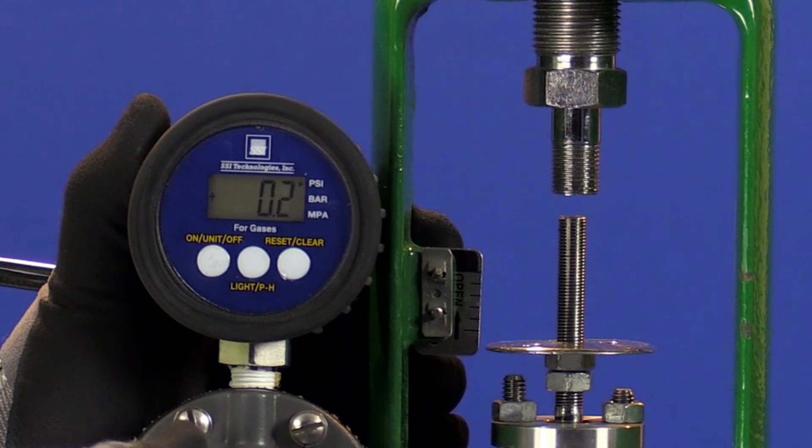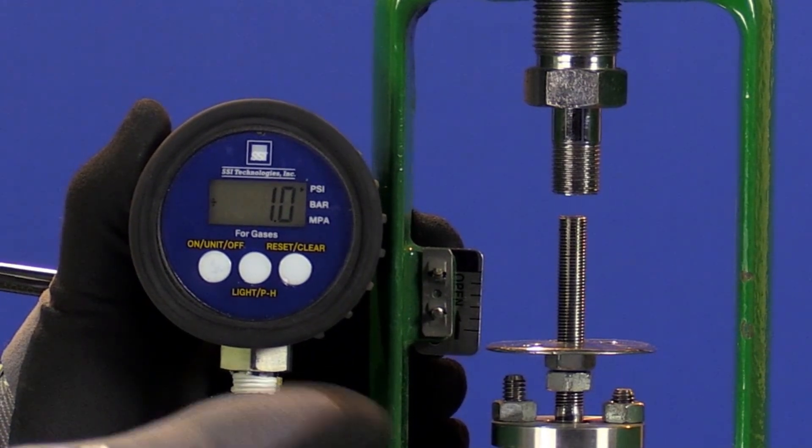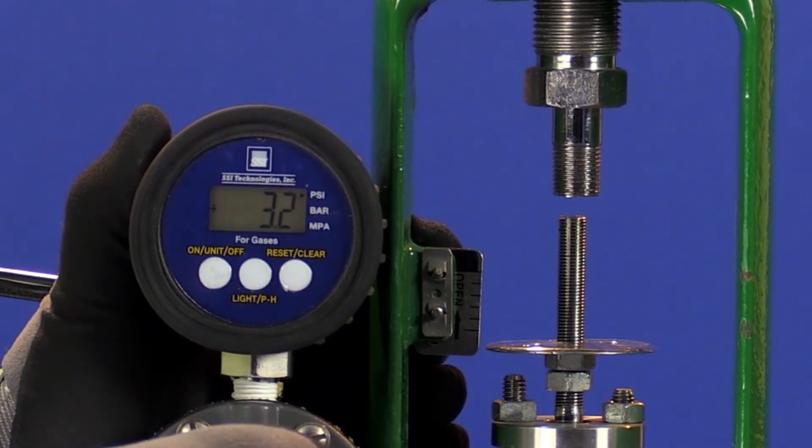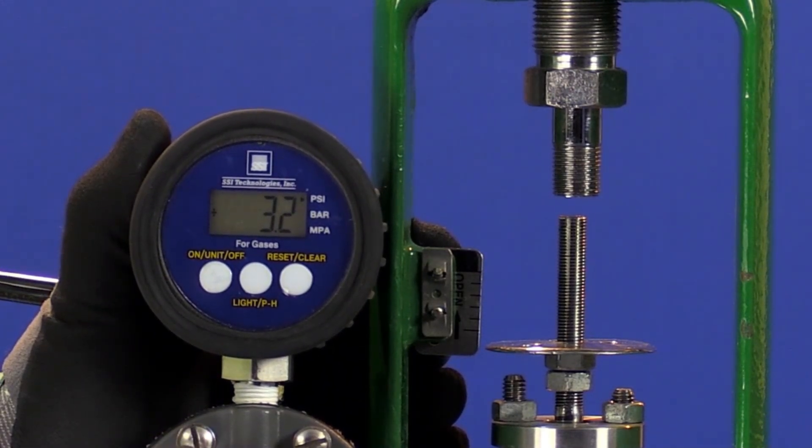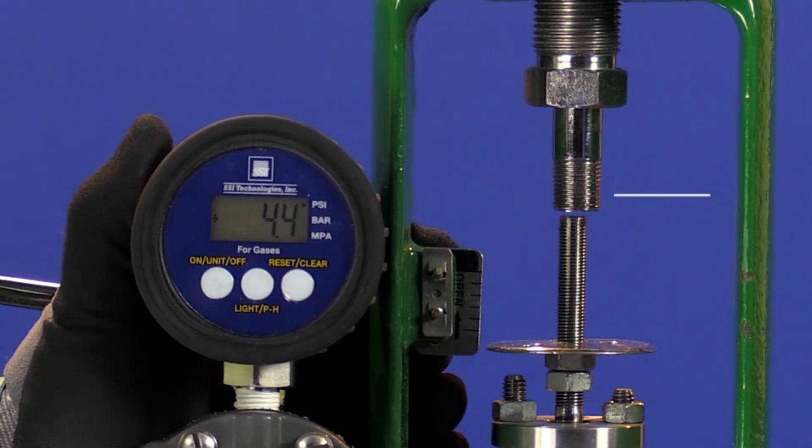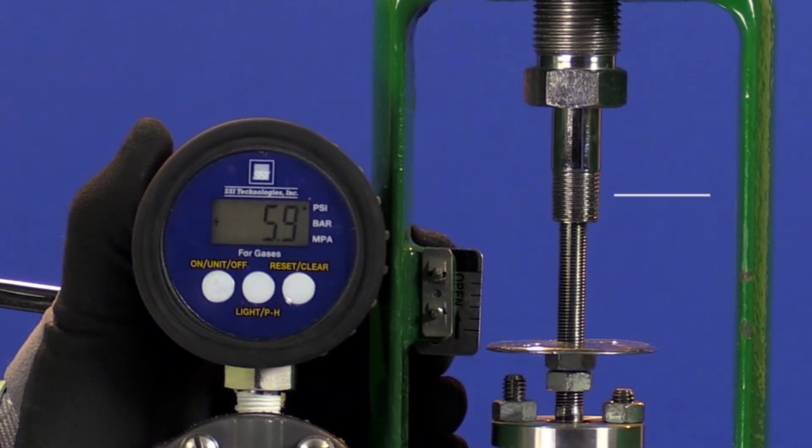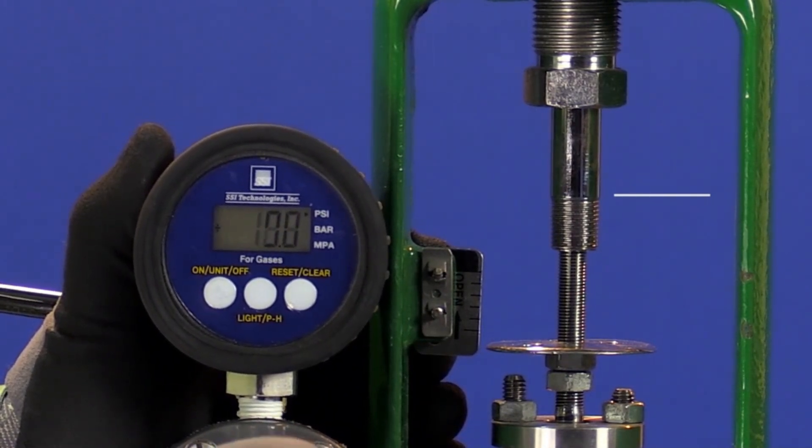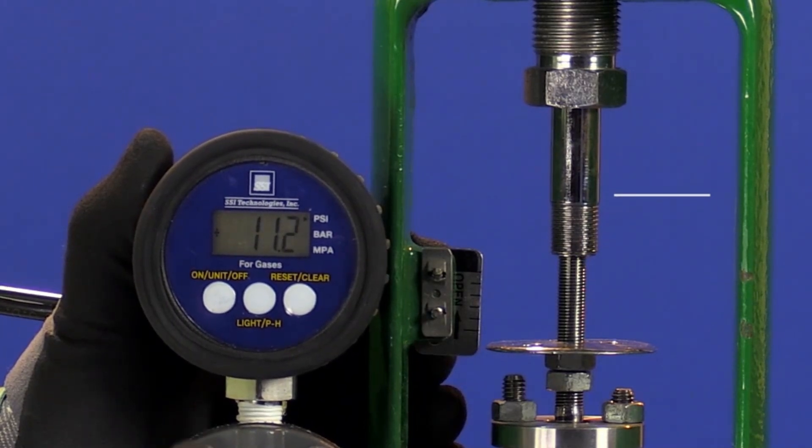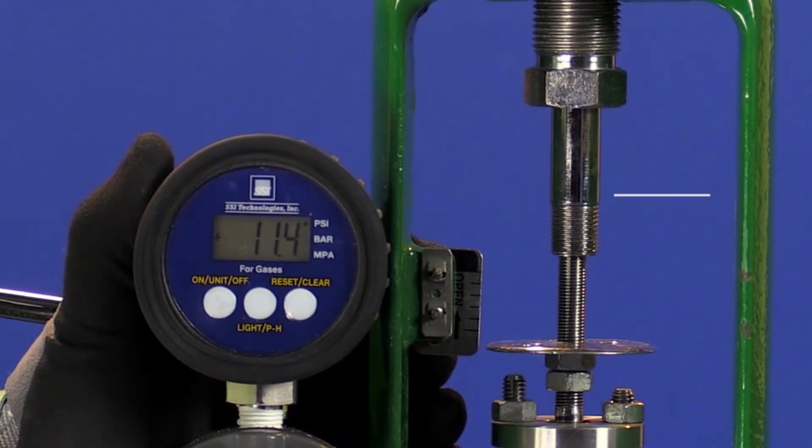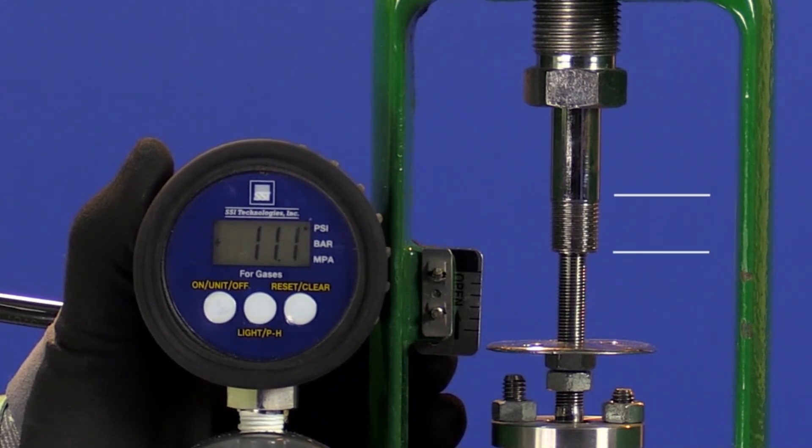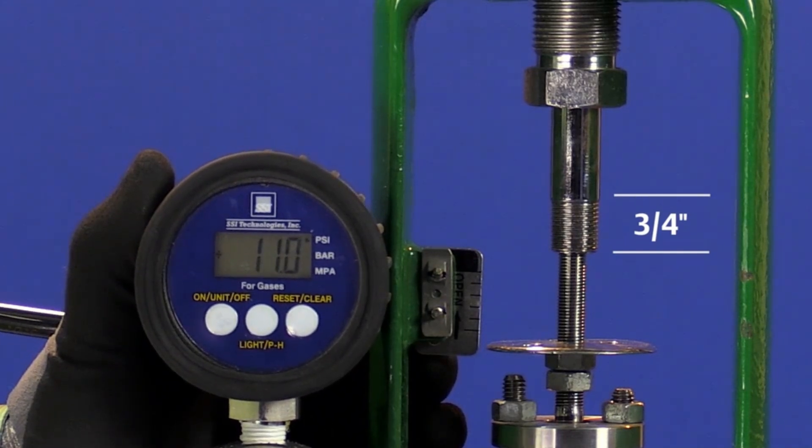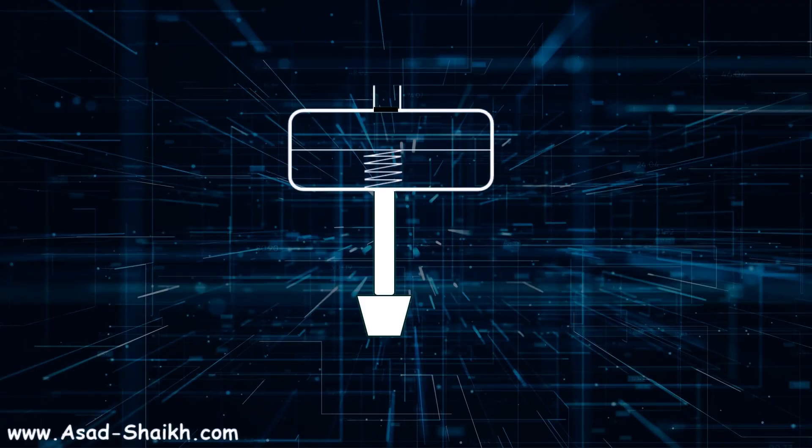At 0 psi, the spring is pushing the actuator to the upper travel stop. Bench set is always calibrated from the upper travel stop. The stem does not move as I increase the pressure from 0 to 3 psi due to the initial compression of the spring. At 3 psi we see the first movement of the actuator. This pressure where the initial movement of the actuator stem is detected is the lower bench set value. As I continue to increase pressure in the actuator, the stem continues to stroke down. As I approach 11 psi, I have reached the rated travel of the valve, three quarters of an inch.